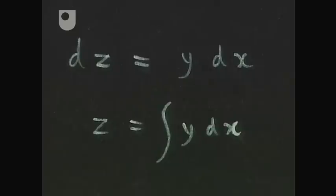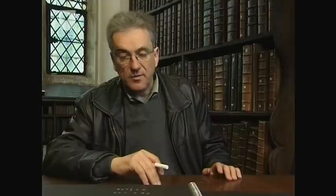Leibniz invented the integral sign that's still used today. It's a long-stretched s, because he saw the process as summing. And in fact, he also invented the letter d for the process of taking differences — differentiation. From this comes the name differential calculus. This notation made it very easy to calculate, and very fast he arrived at rules for differentiation, for instance the product rule and the quotient rule.